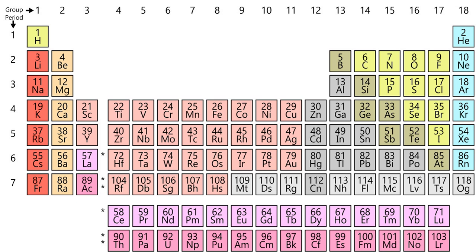German chemist Leopold Gmelin worked with this system, and by 1843 he had identified ten triads, three groups of four, and one group of five. Jean-Baptiste Dumas published work in 1857 describing relationships between various groups of metals. In 1857, German chemist August Kekulé observed that carbon often has four other atoms bonded to it — methane, for example, has one carbon atom and four hydrogen atoms. This concept eventually became known as valency. In 1862, Alexandre-Émile Béguyer de Chancourtois, a French geologist, published an early form of periodic table which he called the telluric helix or screw, and was the first person to notice the periodicity of the elements.